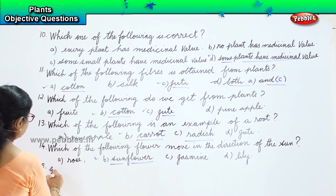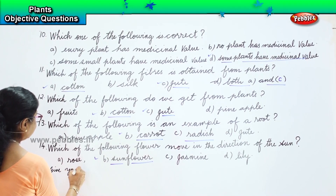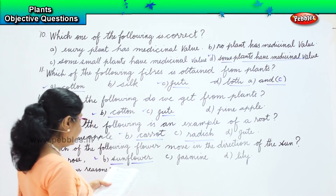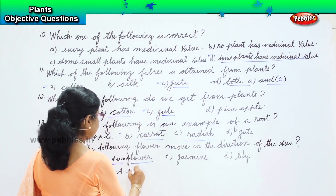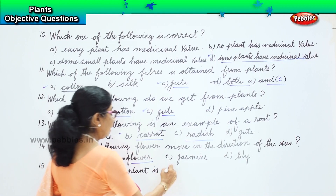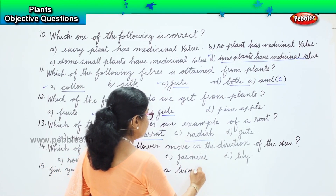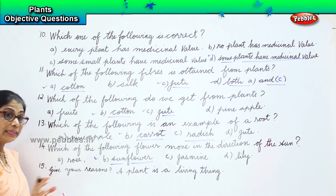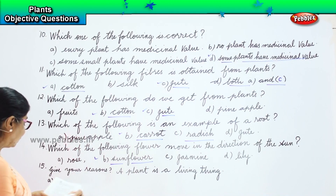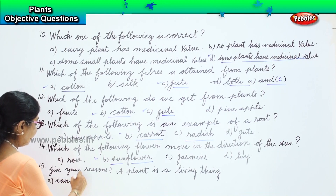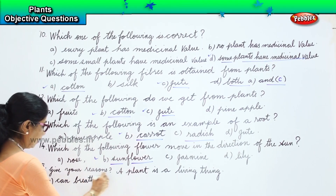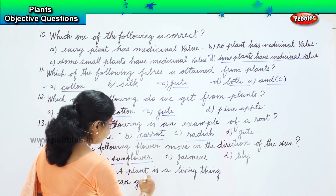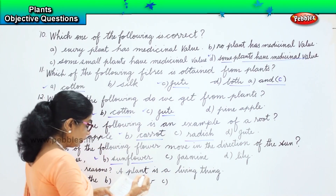Question 15: give your reason - a plant is a living thing. The options for reasons are: option A - can breathe, option B - can grow. You must give your reason why a plant is a living thing.